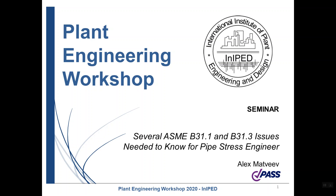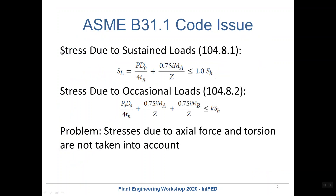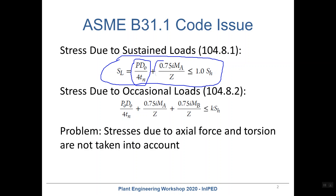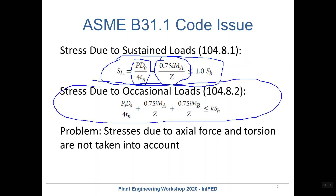The first issue is in the B31.1 code and it is related to stresses due to sustained loads. If we check the equation from the code, we can see that it includes the axial stress from pressure and the bending stress from bending moment, but it does not include the stress caused by axial force. The same issue applies to occasional loads — axial load stresses are not included.